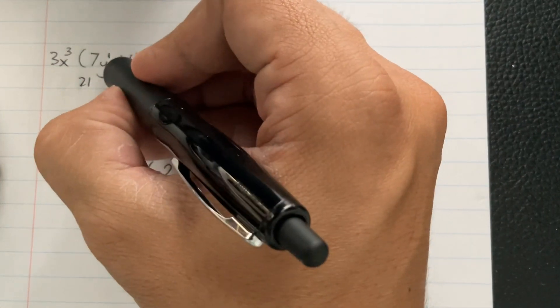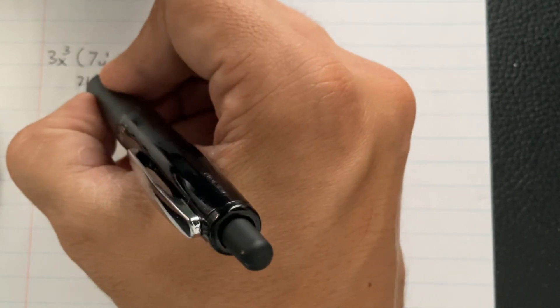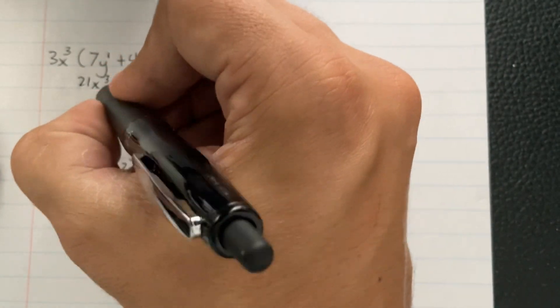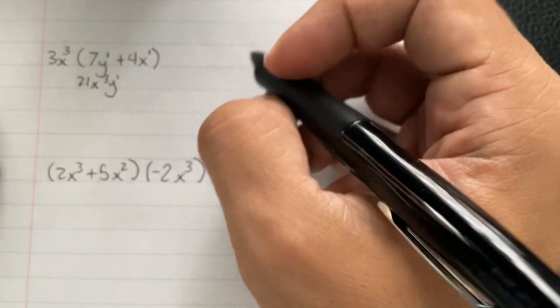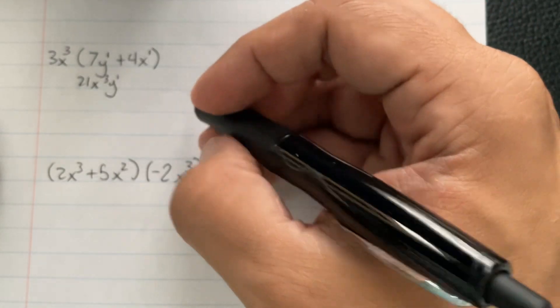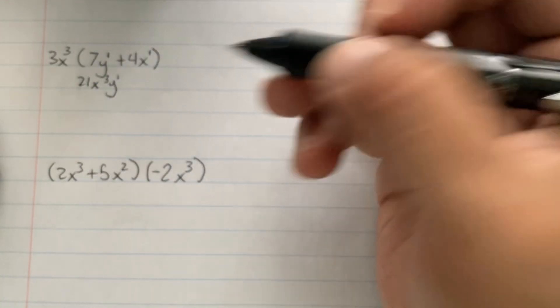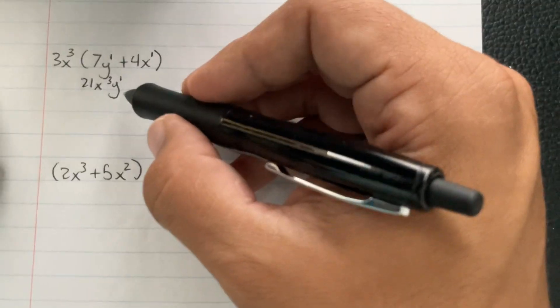The x³ doesn't have anything to multiply with, so it's just going to be x³ and y¹, which is really just y. So it just added itself to there. I put them xy, because I put them in alphabetical order.